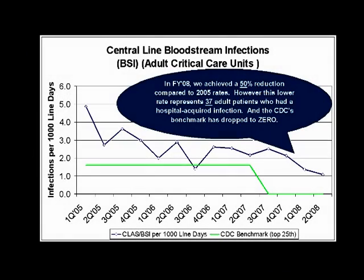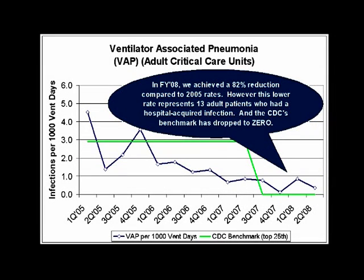These run charts show that we have made substantial progress in reducing our central line bloodstream infections and ventilator-associated pneumonias. In order to get to zero infections — our Memorial Care bold goal for 2009, and a target already achieved by the top performing hospitals in the U.S. — we will need to bring our hand hygiene practices up to the 100% level.